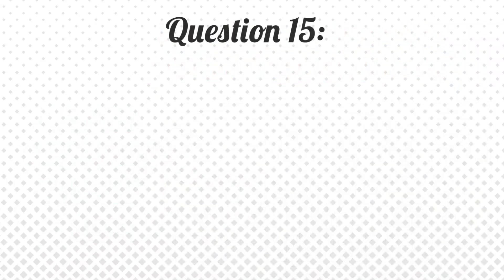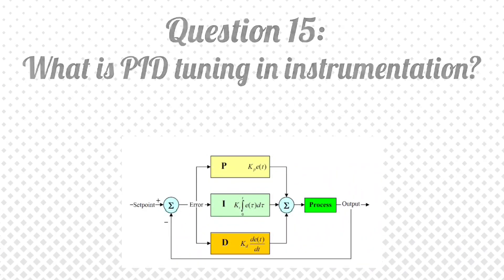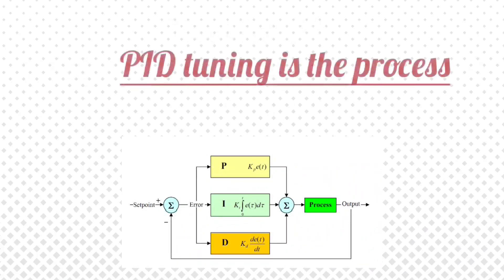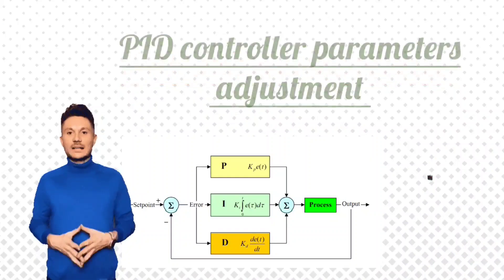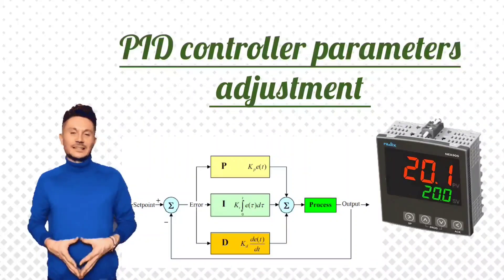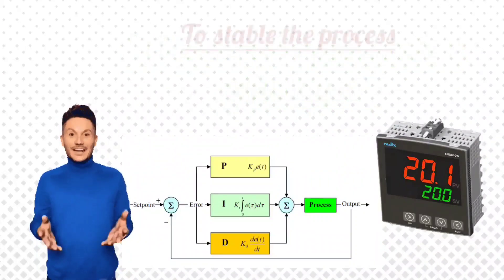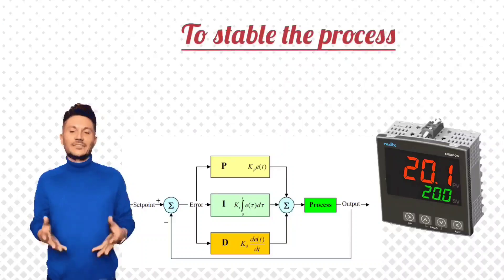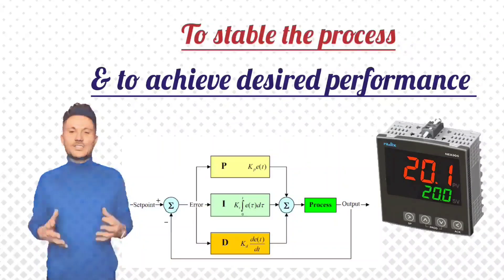Question 15: What is PID tuning in instrumentation? Answer: PID tuning is the process of adjusting the parameters of a PID controller to stabilize the process and achieve the desired performance.